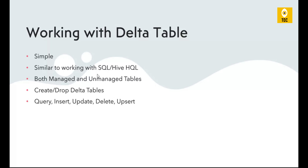Delta tables are used to create both managed and unmanaged tables. Managed are the internal tables and unmanaged are external tables, which are mounted to external sources like cloud sources, data lake storage, or S3 buckets. We will discuss managed and unmanaged tables in detail in future videos.